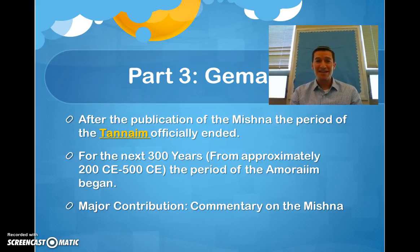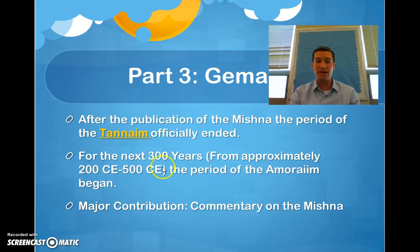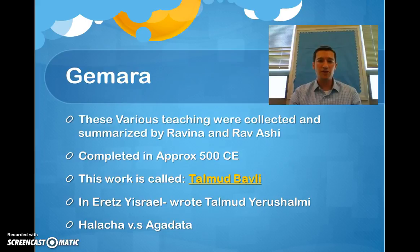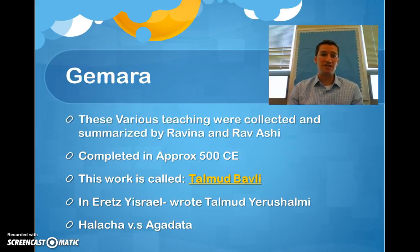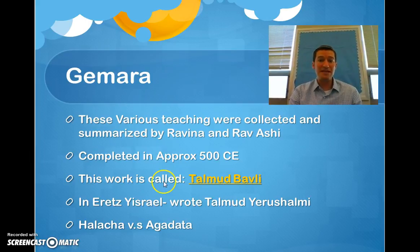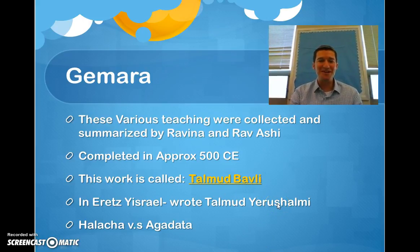The Amorayim didn't physically write down the Gemara — they were having discussions and explaining aspects of the Mishnah. Eventually, all these explanations over this 300-year period were collected by two great rabbis, Ravina and Ravashi, who gathered, collected, and compiled them into the Gemara, an elaborate commentary on the Mishnah. This was completed in approximately the year 500 CE and is called the Talmud Bavli. In Eretz Yisrael there was also the Talmud Yerushalmi, but we'll be focusing on the Bavli.